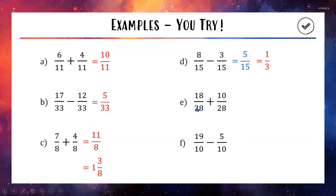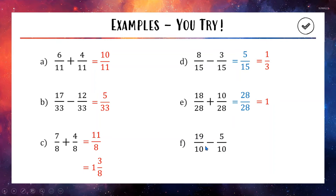For D, keep the base as 15 and 8 minus 3 is 5, giving 5 out of 15. We can simplify that to 1 out of 3. For E, the base is 28 and 18 plus 10 is 28 as well — 28 out of 28 can be written as one whole. For F, 19 take away 5 is 14 over 10, which simplifies to 7 out of 5. You can also write that as 1 and 2 fifths, or leave it as 7 out of 5.